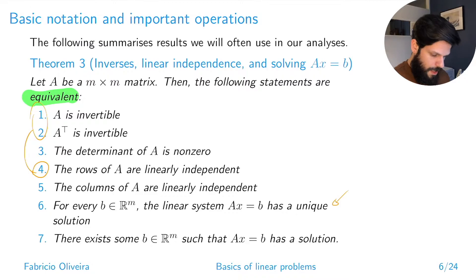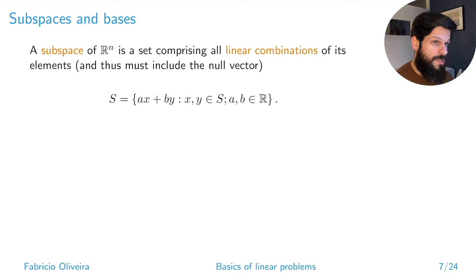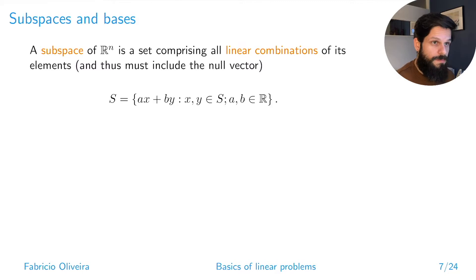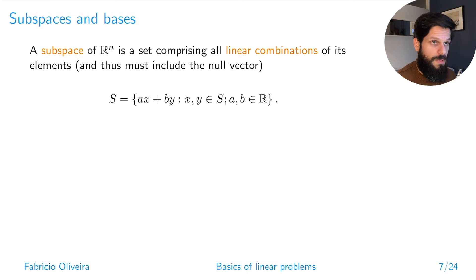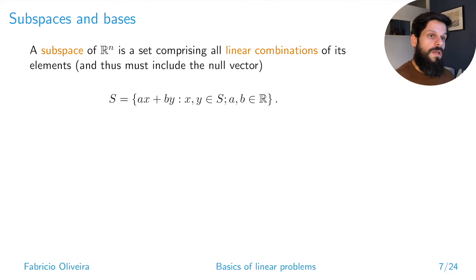Another important concept is subspaces and how they lead to the notion of bases. A subspace in R^n is the space you get when you take all the linear combinations of its elements. For example, a subspace S given by two elements from S looks at all possible linear combinations — and that's the same linear combination concept we used in the context of linear independence.